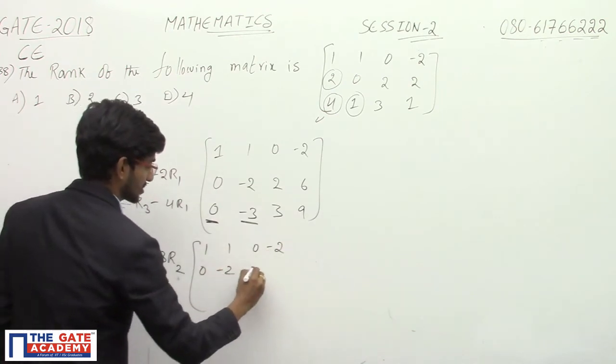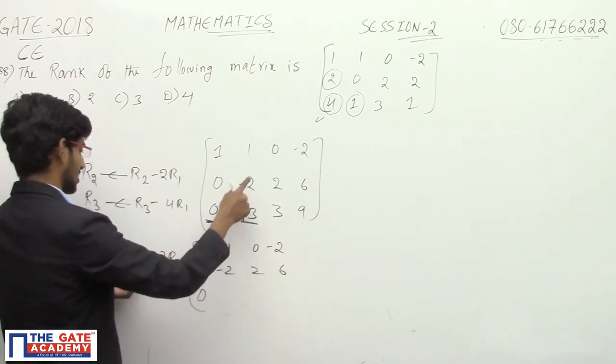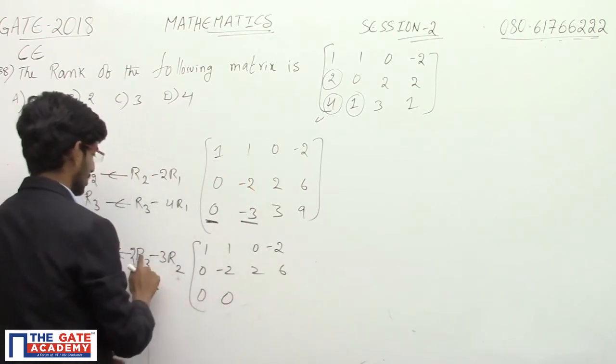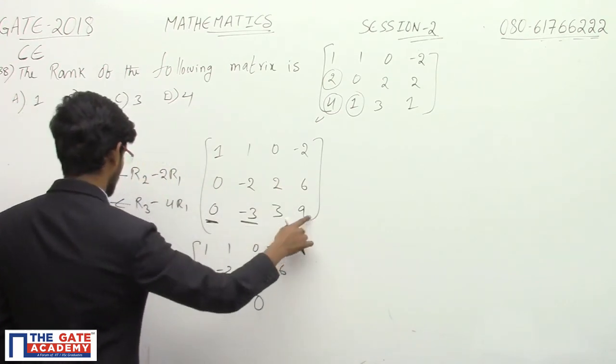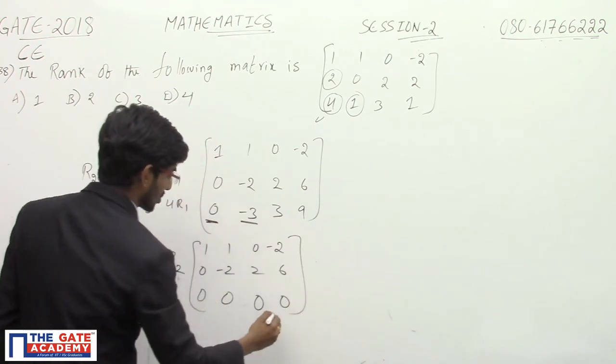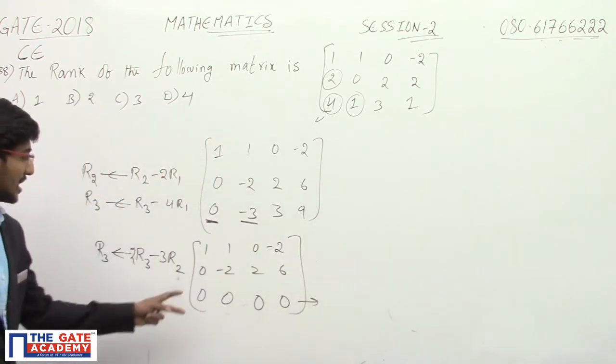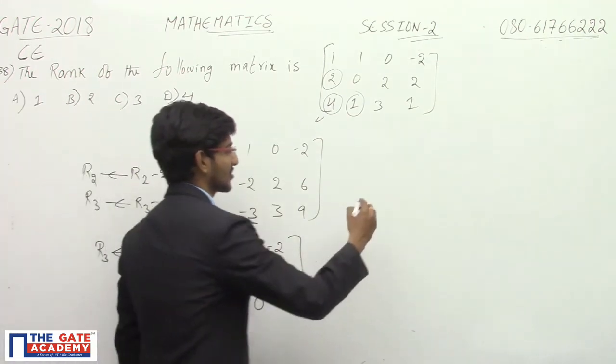0, -2, 2, 6. Now 0, -6 plus 6 equals 0, 6 minus 6 equals 0, 18 minus 18 equals 0. So the entire row becomes 0. Only two non-zero rows are there, right? So rank equals